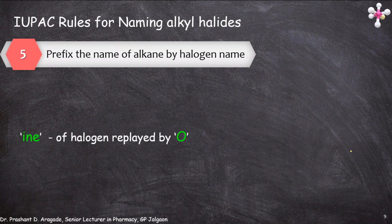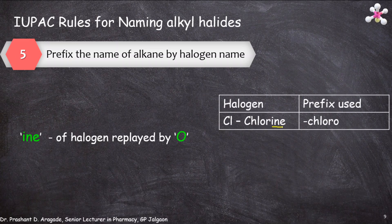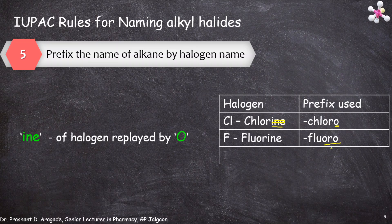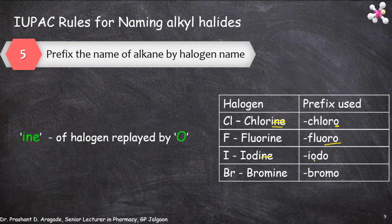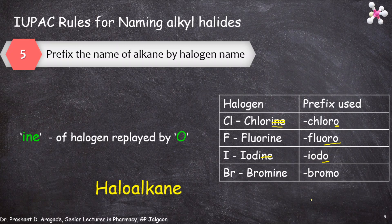For example, replace the -ine of chlorine with -o to get chloro; fluorine becomes fluoro; iodine becomes iodo; and bromine becomes bromo. Whenever halogen atoms are present as substituents, use the prefixes chloro, fluoro, iodo, or bromo — prepared by replacing -ine with -o. Generally, alkyl halides are named as haloalkanes, where halogen acts as the substituent and the parent name is the name of the continuous carbon chain, that is, the alkane.